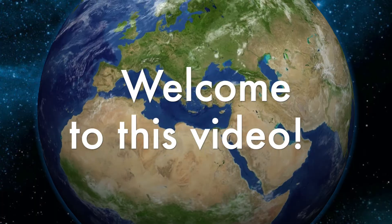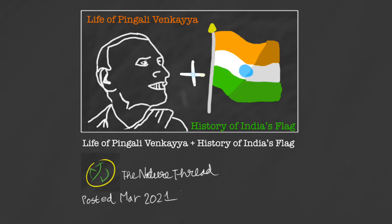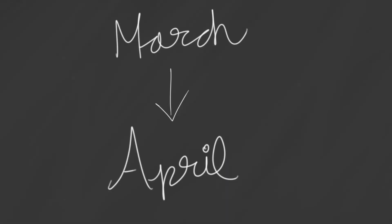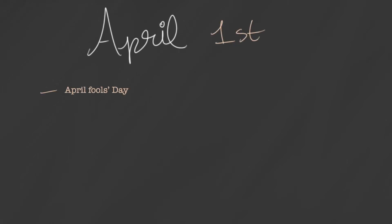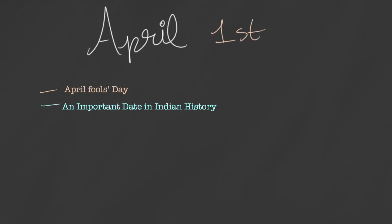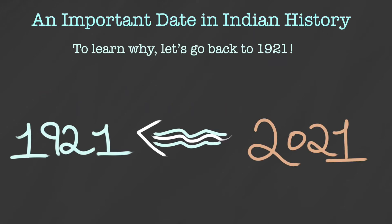Hey everyone, welcome to this video. If you're watching this when it's coming out in March 2021, then April 1st is a few days away. This isn't an April Fool's joke — April 1st is actually quite a significant date in Indian history, and to know about that we have to go back to 1921.